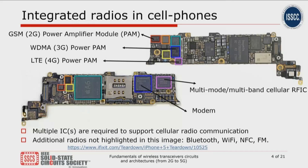The modern mobile phone contains multiple radios. You have radios for Bluetooth, which could be used to pair your mobile phone with a wireless headset. You have Wi-Fi radios to connect to a router and get access to the high-speed internet as well. However, the key function of a cell phone is to build a radio which can transmit and receive to a remote base station, which could be several tens of miles away.